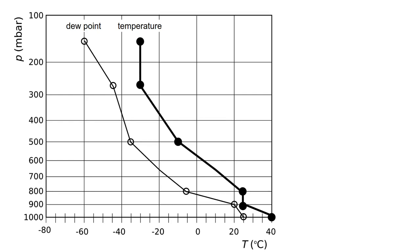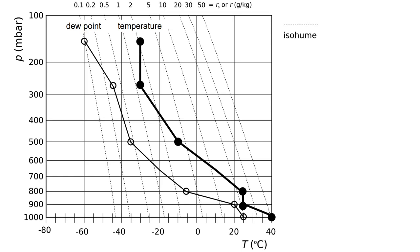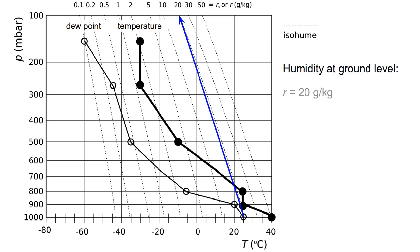Now let's see what we can do with a graph like this. First of all, let's look at the humidity — specifically the relative humidity. We need an extra set of lines called isohumes. Iso for the same and ume for humidity — these lines indicate points of equal humidity. At the top you can see the scale; it's in grams of water per kilogram of air. You can measure the humidity at ground level by using the open circle, which is the dew point at ground level, and following the isohume up. Here it's 20 grams per kilogram — the actual amount of water in the gas state in the air at ground level.